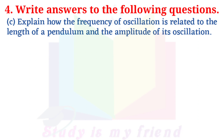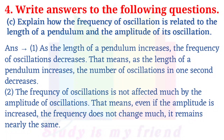C. Explain how the frequency of oscillation is related to the length of a pendulum and the amplitude of its oscillation. Answer: As the length of a pendulum increases, the frequency of oscillation decreases — that means the number of oscillations per second decreases. The frequency of oscillation is not affected much by the amplitude of oscillations; even if the amplitude is increased, the frequency does not change much and remains nearly the same.